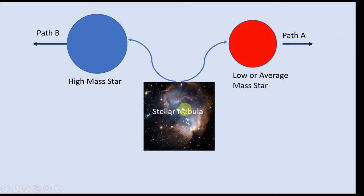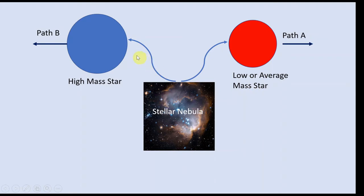When a star has formed from a stellar nebula or giant molecular cloud and evolved to the main sequence stage — which is one of the most stable phases in a star's life — if the star's mass is about seven to eight solar masses, we categorically say these are low or average mass stars and they will evolve in a particular way. While if the star has a mass of more than 10 solar masses — 20, 30, sometimes even 100 times solar masses — then the evolutionary path will be different.